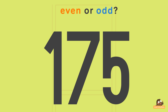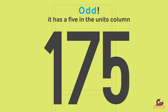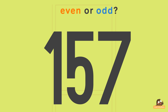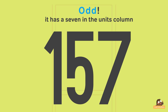175 — even or odd? Odd! It has a 5 in its units column. 157 — even or odd? Odd! It has a 7 in its units column.